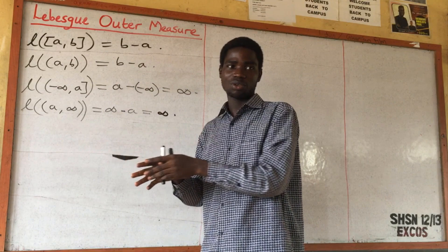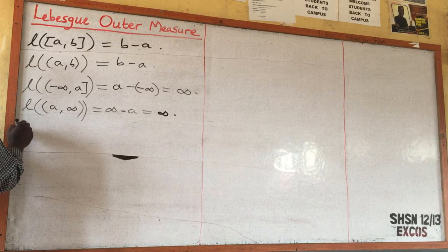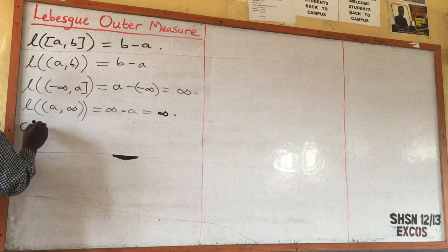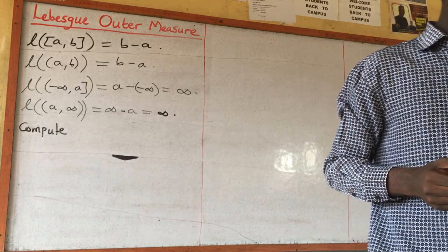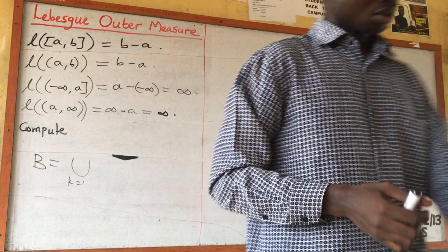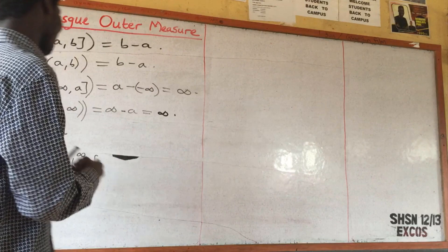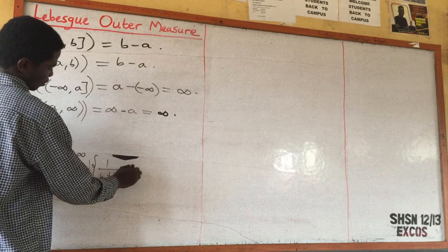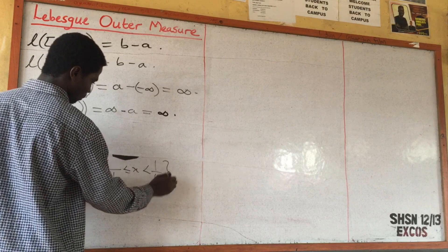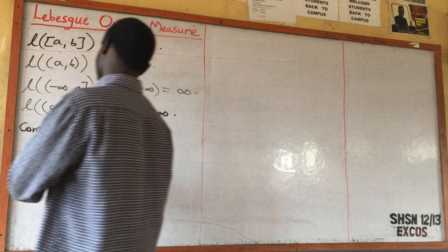So that is the concept of length. I want to explain the Lebesgue outer measure, building it from the concept of length. Imagine you are asked to compute B, which is equal to the union of k starting from 1 to infinity of the set {x : 1/(k+1) ≤ x < 1/k}. You should compute the length of B.